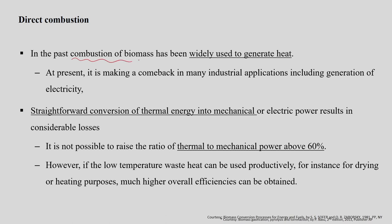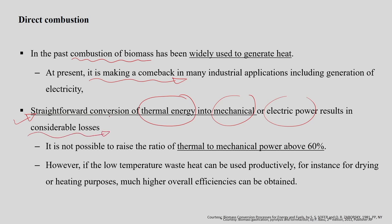The straightforward conversion of thermal energy into mechanical or electrical energy results in considerable losses during the process. It is not possible to raise the ratio of thermal to mechanical power above 60 percent. However, if the low-temperature waste heat produced during this process can be used effectively for drying and heating purposes, much higher overall efficiency can be obtained. The fuel and air mixture is burnt in the combustion unit to produce significant heat energy along with combustion products and radiant energy.